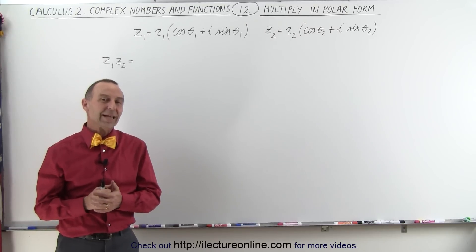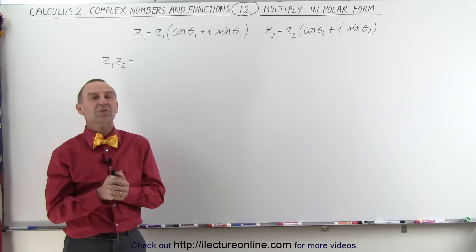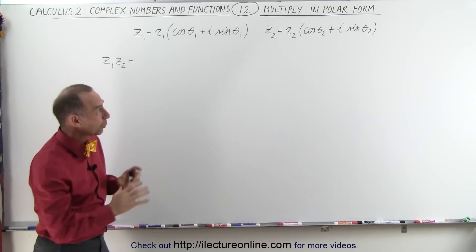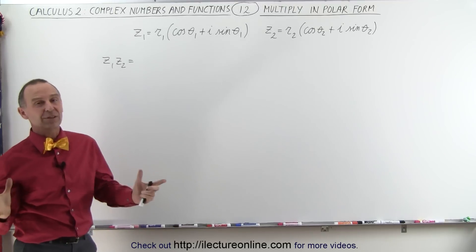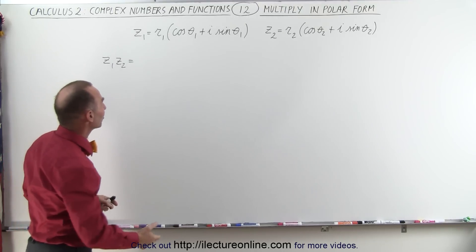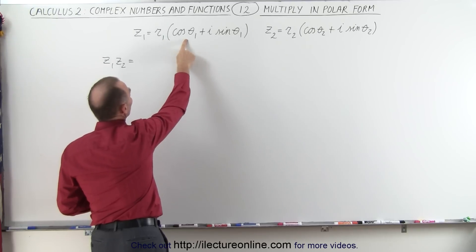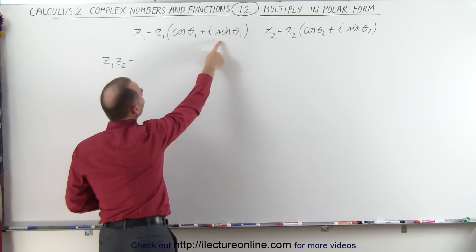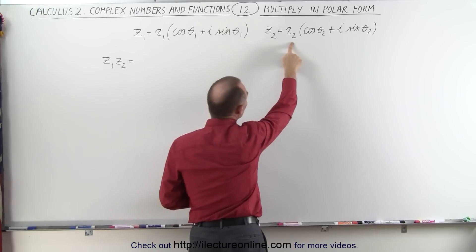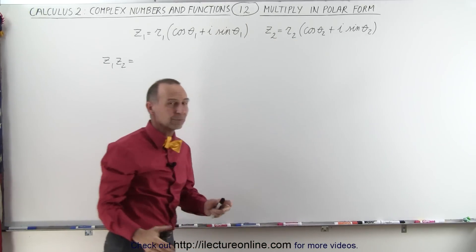Welcome to our lecture online. Now let's learn how to multiply two complex numbers together when they're in polar form, and we're going to do it in a general form so you can see what the formula will look like. So we have two complex numbers: z1 equals r1 times cosine of theta1 plus i sine of theta1, and z2 equals r2 times the cosine of theta2 plus i sine of theta2.